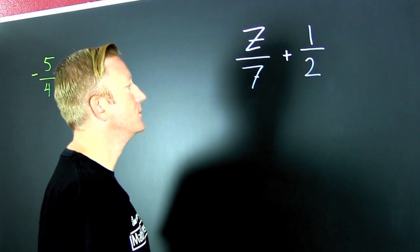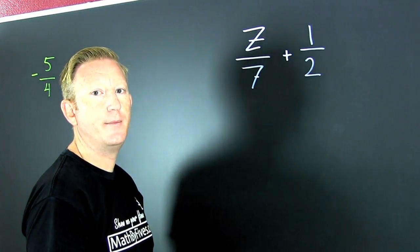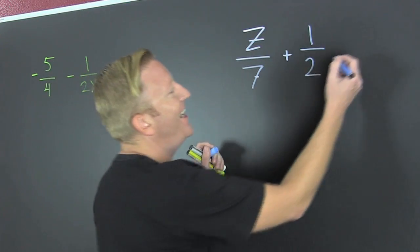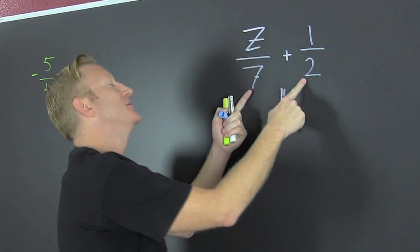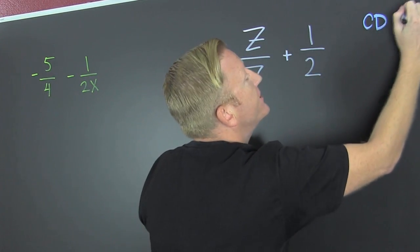This example over here. My denominators are 2 and 7. What's a common denominator going to be if I had one? Here's a common denominator since those are relatively prime. See these? It's going to be 14.